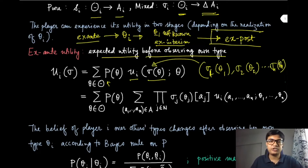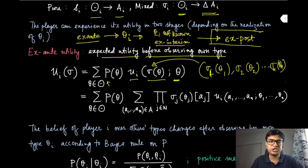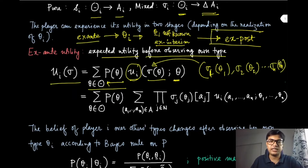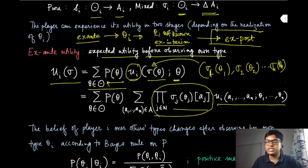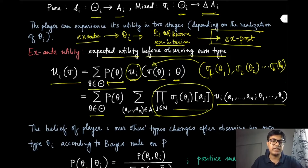At a specific type profile theta, player i does not know any component of it deterministically and can only take an expectation with respect to the common prior p(theta). The ex ante utility of player i — u_i(sigma) — is obtained by summing over all actions weighted by the mixed strategies, taking the corresponding utility for those actions and type profiles, and also taking the expectation with respect to theta since the types have not yet realized.